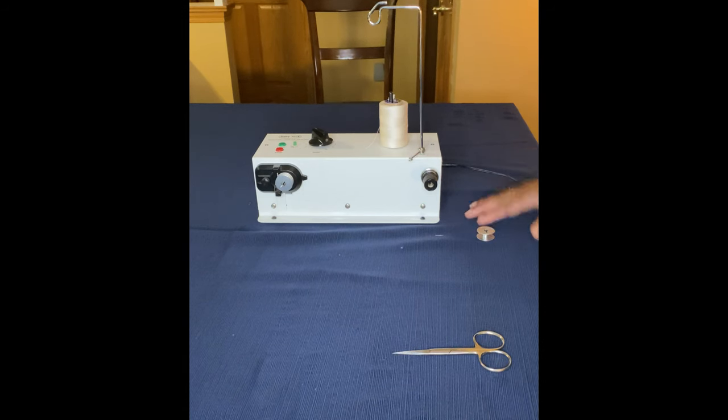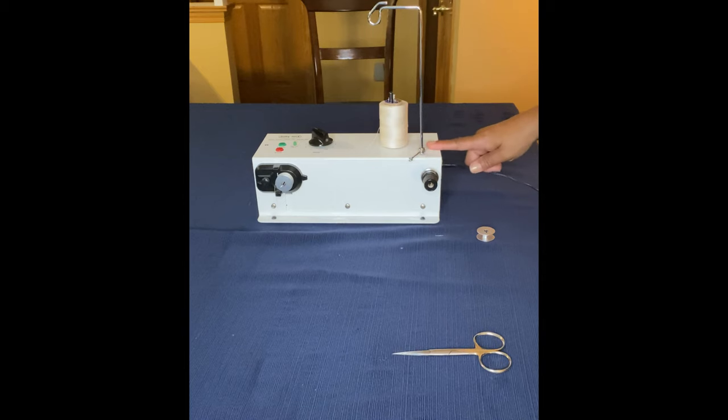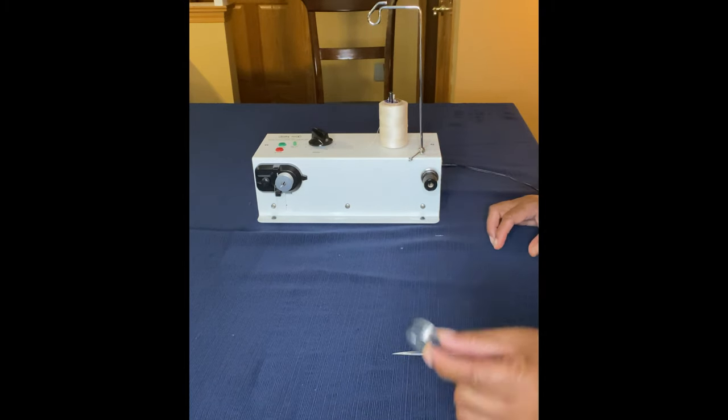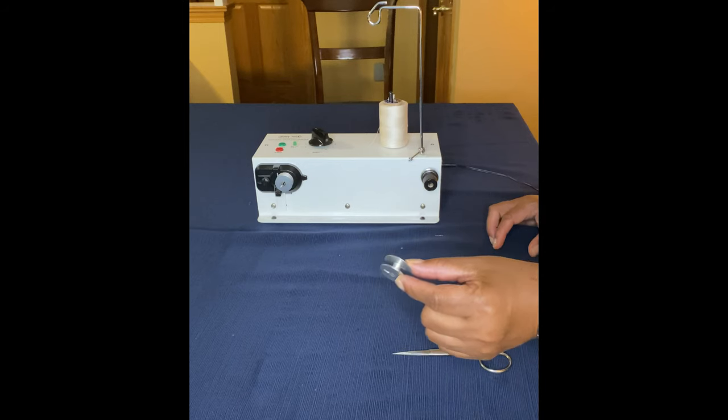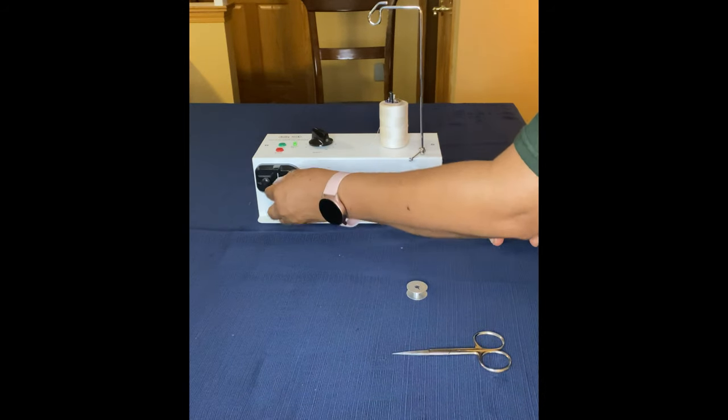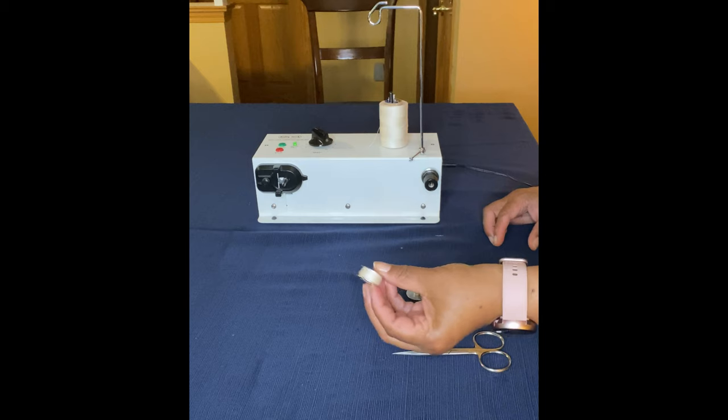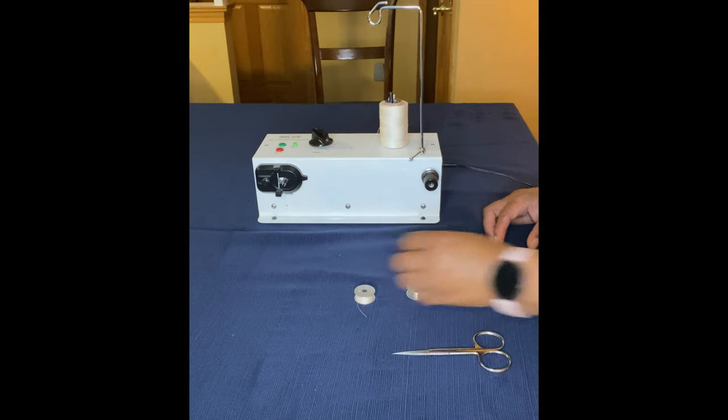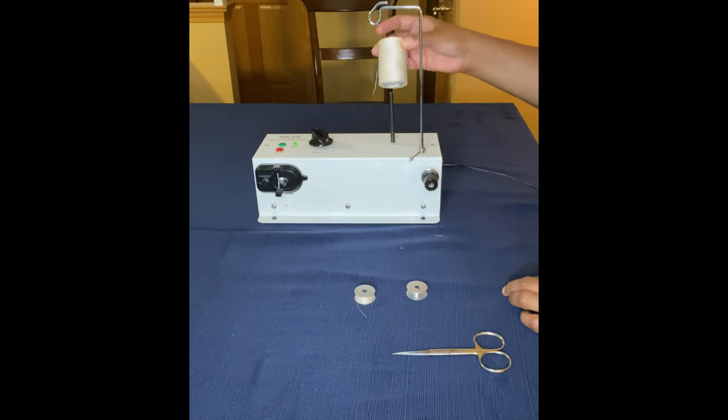To get started, plug in your winder with the cord that came with the bobbin winder. The green light should come on. It'll come with several 15 class bobbin case bobbins and will hold enough thread to quilt at least one to two small quilts.